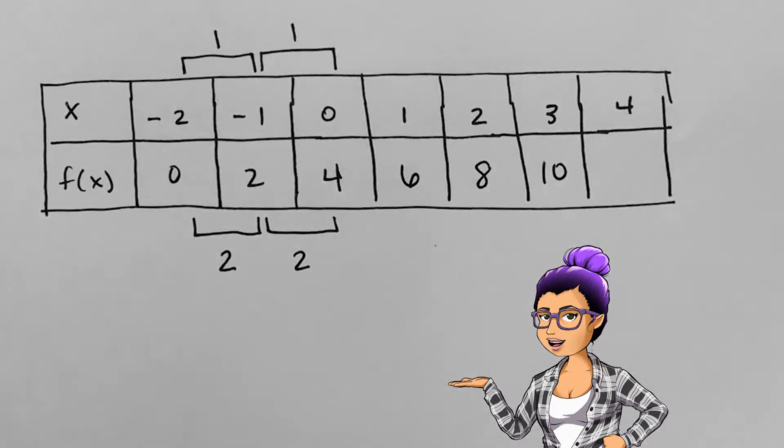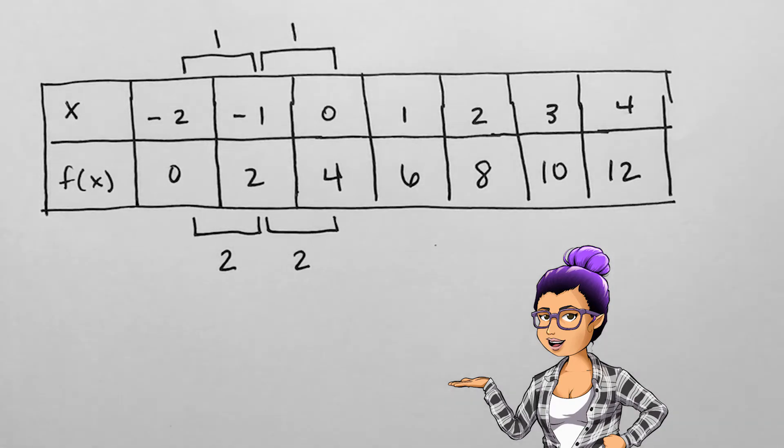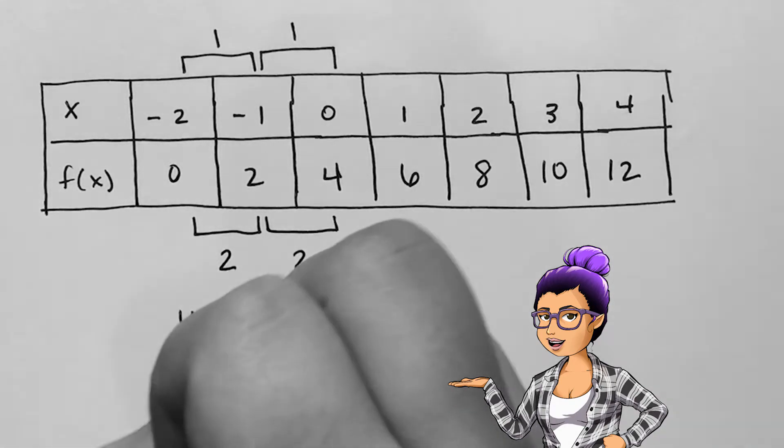The slope of this linear function is 2. The y-intercept is 4. In slope-intercept form, we'd say this function is f of x equals 2x plus 4.